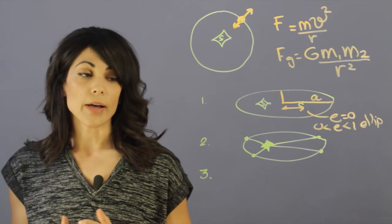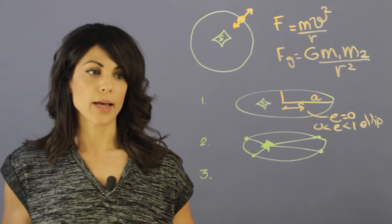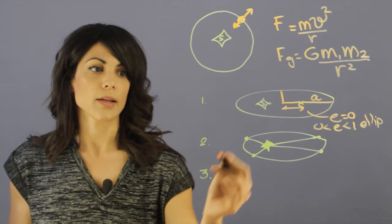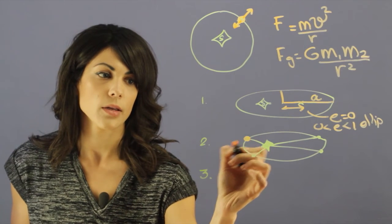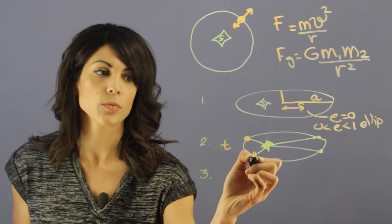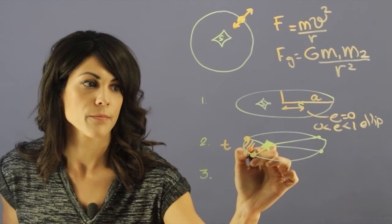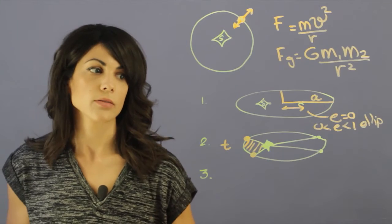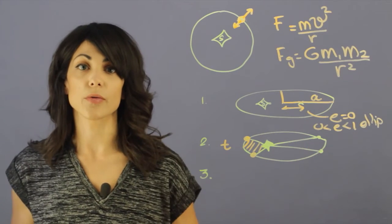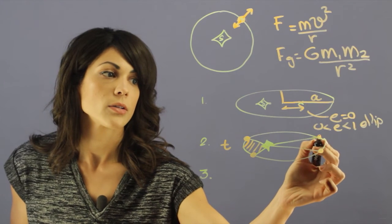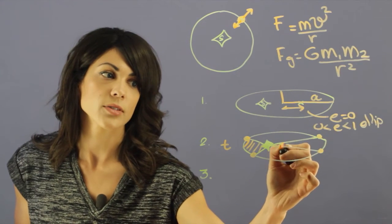So the second law is the equal area law, and this is also important. So when you look at an object, let's say that the object went in time t, it went from this spot to this spot. So it covered this much area.